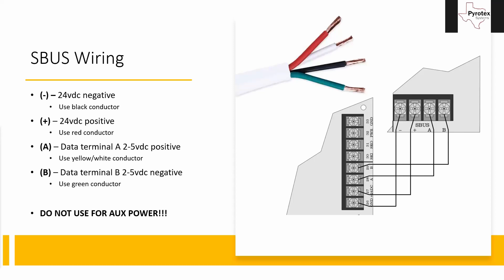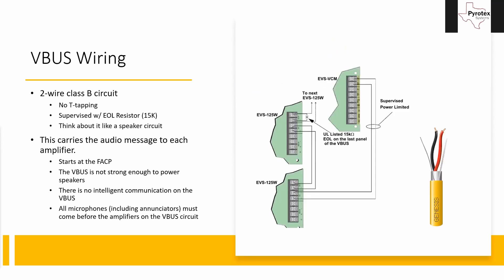To wire SBUS: A always goes to A, B always goes to B, positive to positive, and negative to negative. Moving on to VBUS: as mentioned, this is a two-wire Class B circuit supervised with an end-of-line resistor — specifically a 15K ohm resistor. If you've lost the resistor, that's the value you need. You cannot T-tap it; Class B supervision means supervision is done via the straight-through path. If you have a remote microphone on the job, pull from your panel to your microphone, then from your microphone to the amplifiers. Any other order and it won't work or supervise correctly.